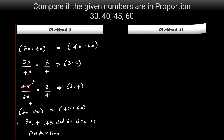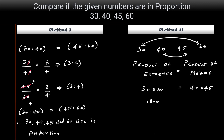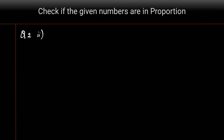Method two — cross product: product of extremes is the first term times the fourth term: 30 × 60 = 1800. Product of means is the second term times the third term: 40 × 45 = 1800. Since 1800 = 1800, product of extremes equals product of means, therefore 30, 40, 45, and 60 are in proportion.